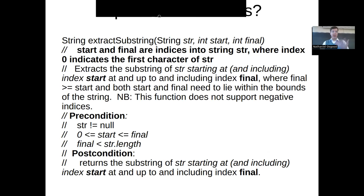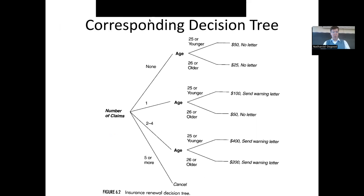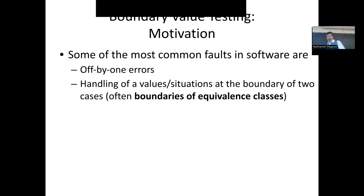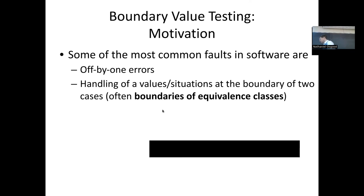I want to build on that and introduce an additional principle: boundary value testing — the idea of testing around the boundaries of equivalence classes. Within an equivalence class, inputs should yield the same error messages, elicit the same observable behavior, and be dealt with by the same branches or paths in the code. I would argue that it's often the boundaries between those equivalence classes where a lot of errors occur.